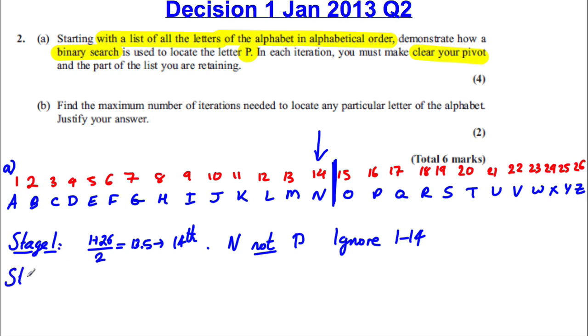Let's continue with stage 2. Well, now we've got the list 15 to 26. So you add your first 15 plus 26 divided by 2. Now 15 plus 26 divided by 2 is 20.5. And that's indicating the 21st term. Now the 21st term is U. And it's clearly not P. So you're going to ignore U and onwards. So you're going to ignore everything from 21 to 26 this time.